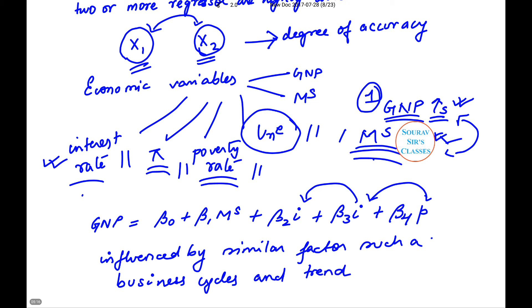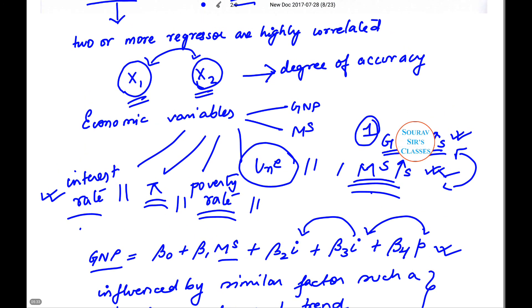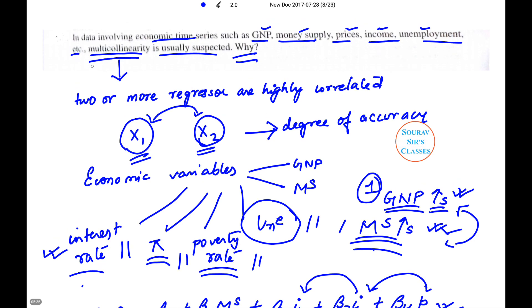Influenced by similar factors such as business cycles and trends, and therefore in a regression analysis using these variables such as GNP, money supply, etc., one should expect the problem of multicollinearity.